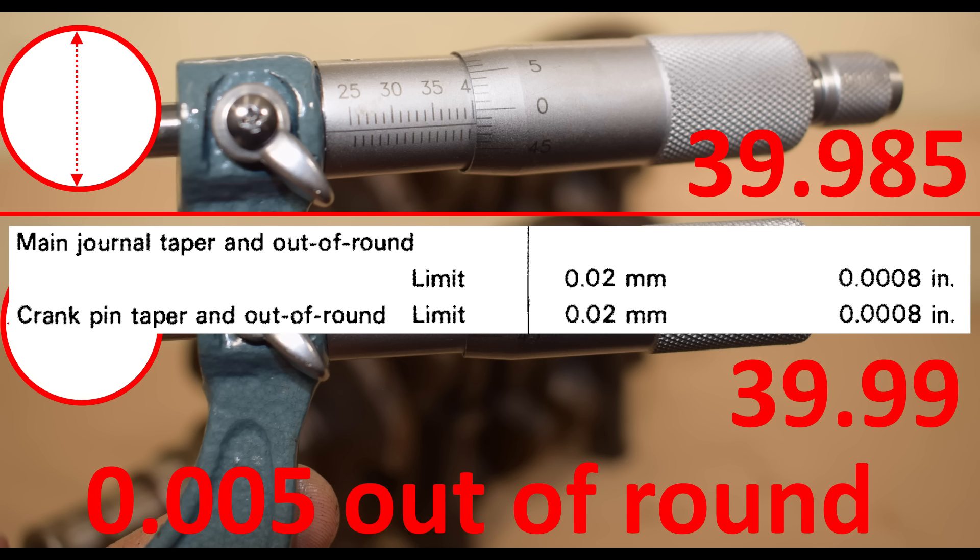Somewhere around 0.05 millimeters which is well below the maximum out of round allowed according to the factory service manual. That being said, this is a somewhat generous out of round and taper allowance and I'm personally not comfortable reusing a crankshaft if it has more than 0.01 millimeters of taper or out of round.